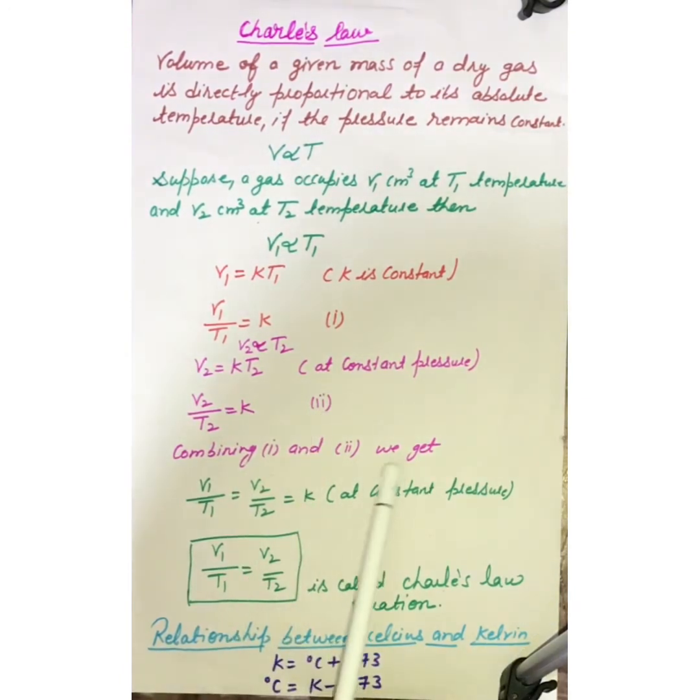Combining both the terms, we will get V1 upon T1 equals to V2 upon T2 equals to K at constant pressure. Again, I have written this expression. I am putting this expression in the box and this is called Charles law equation. And students, here in this Charles law, we will use Kelvin scale of temperature.